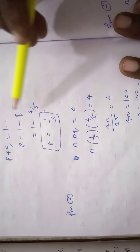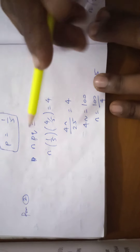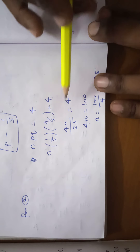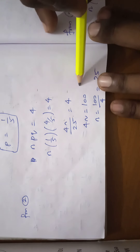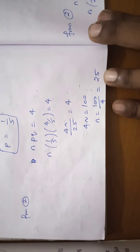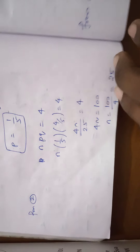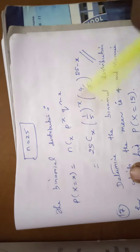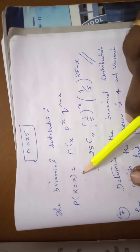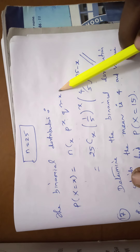From equation number 1, Np = 5. Substituting p = 1/5: N × (1/5) = 5, so N = 25. Finally, we compute the binomial distribution. The binomial distribution formula is P(X = x) = NCx · p^x · q^(N−x).